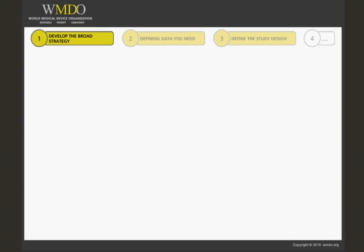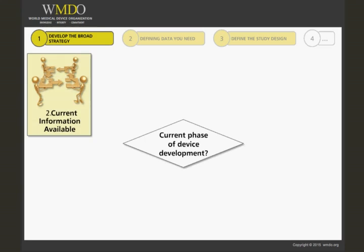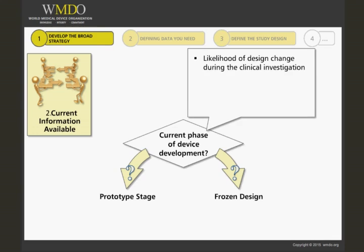Our second point is understanding the phase of device development we are in — in other words, how close are we to a final design, or a frozen design in our jargon. When planning a clinical investigation, we must take into account the likelihood of the need for a device design change. Work closely with research and development to get a feel for how prototype-like the investigational device still is, and evaluate whether possible design changes will be major or minor, and whether these will stop the clinical investigation or merely suspend it.